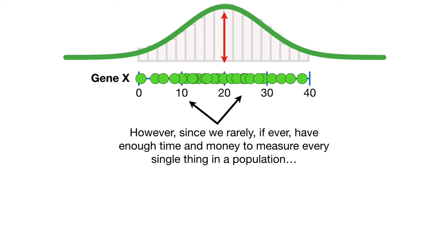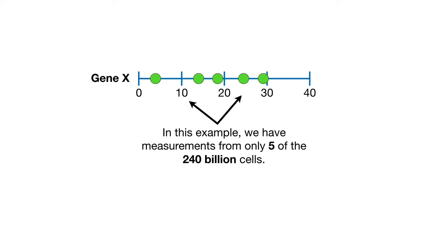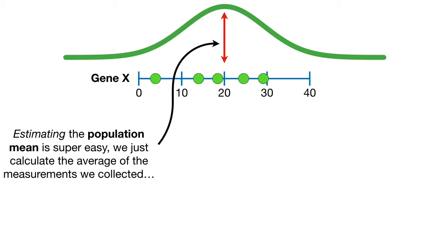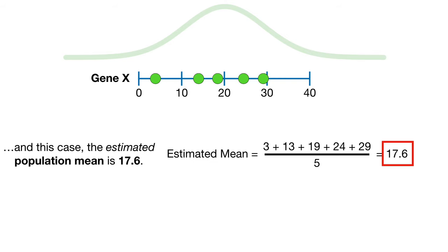However, since we rarely, if ever, have enough time and money to measure every single thing in a population, we almost always estimate the population mean using a relatively small sample. In this example, we have the measurements from only 5 of the 240 billion cells. Estimating the population mean is super easy — we just calculate the average of the measurements we collected. And in this case, the estimated population mean is 17.6.